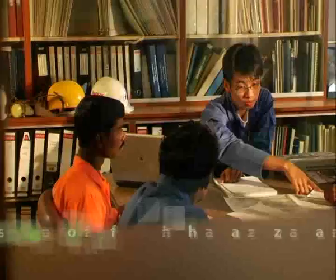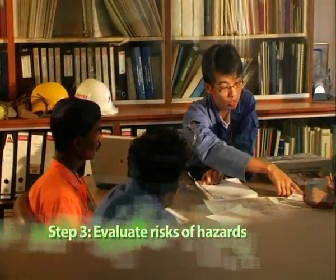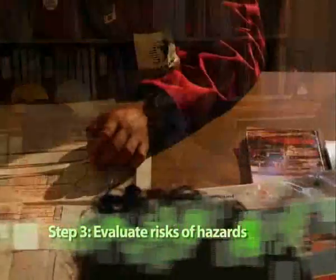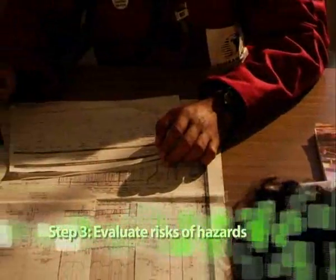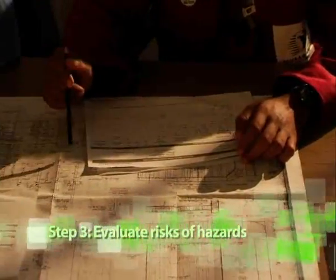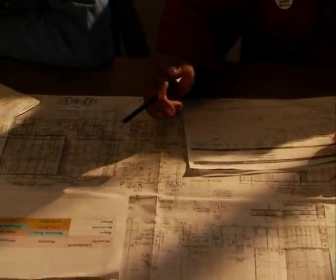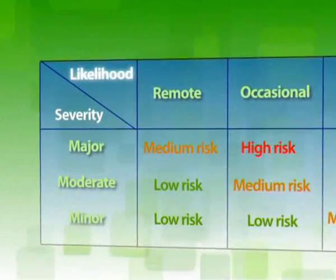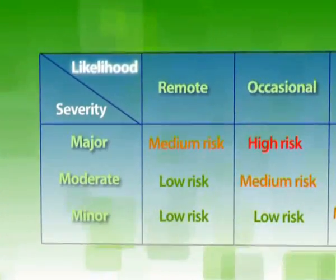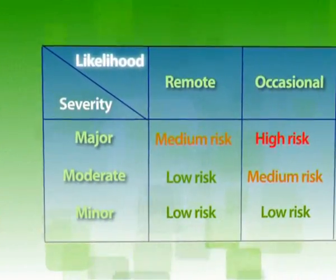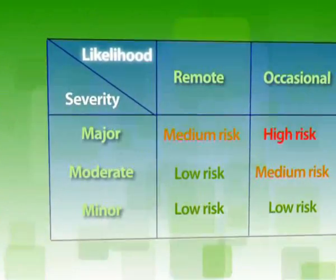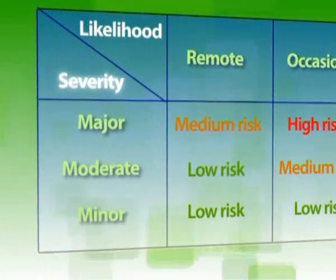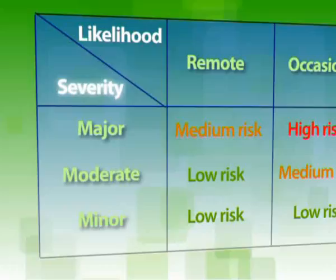Step 3: determine the risk level of these identified hazards based on two factors — the likelihood of an accident occurring as a result of the hazards, and the severity of the accident if it happens.